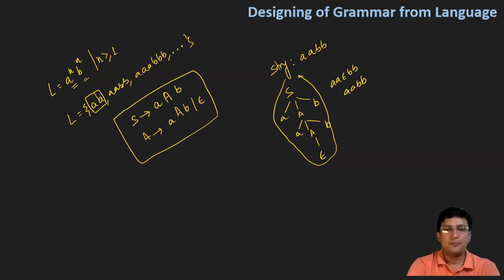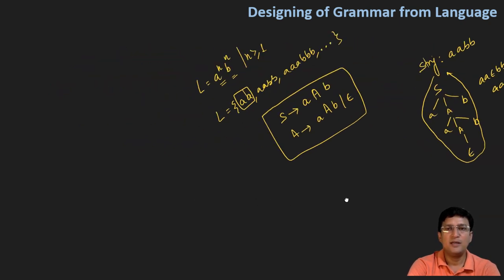Suppose that in this grammar, instead of n greater than or equal to one, n is greater than or equal to zero. So this is a power n and b power n and n is greater than or equal to zero. The string set we have made, epsilon will also be part of it. In that case we need to ensure that the start symbol also produces epsilon.